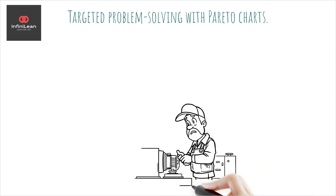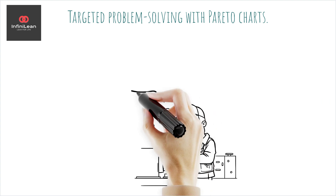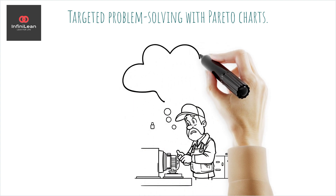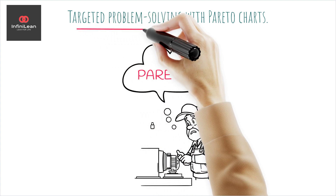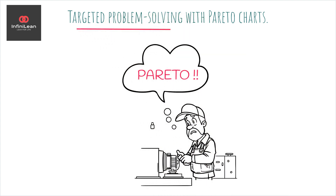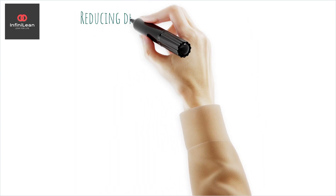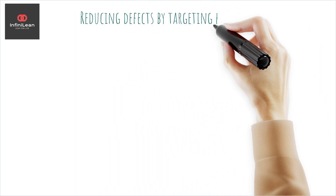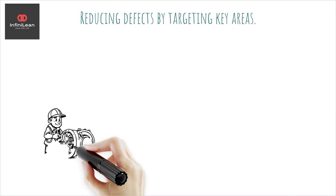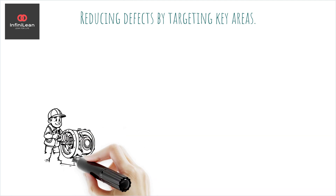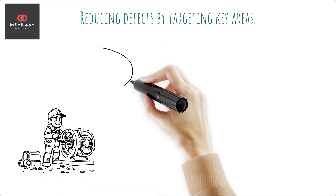Imagine you're dealing with a production line that frequently has defects. Using a Pareto chart, you discover that nearly all defects originate from just a few machines. With this insight, you can address these specific machines, significantly reducing defects and improving overall productivity.